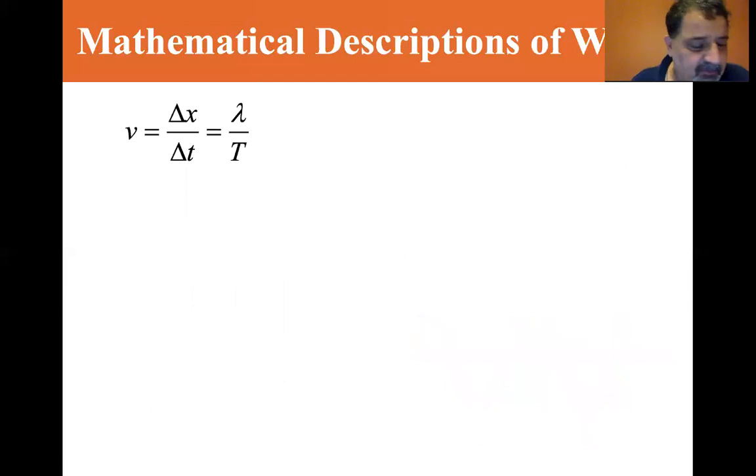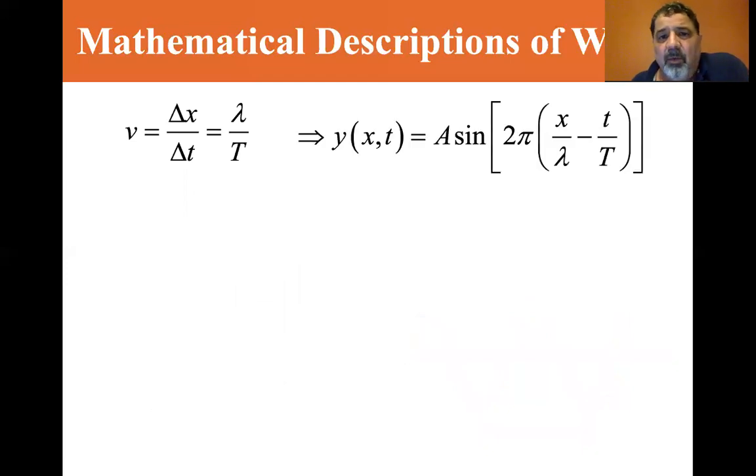So the velocity, or I hope I haven't been touching the microphone. I apologize if I have, it's a habit I have. The velocity is equal to delta x over delta t, which is equal to the wavelength lambda divided by the period. So y of x at t is equal to A sine two pi x over lambda minus t over the period.